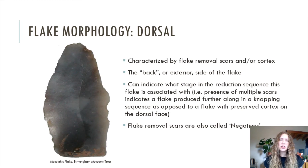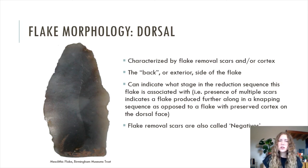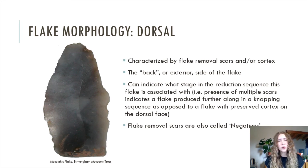The dorsal side of a flake is characterized by flake removal scars. You can see here a ridge running along the middle indicating two previous flake removals — so these are two flake scars. The dorsal, as I mentioned, is the back or exterior side of the flake. It can often indicate what stage in the reduction sequence the flake is associated with — for example, the presence of multiple scars indicates a flake produced further along in a napping sequence, as opposed to a flake with a lot of cortex indicating something not so far along in the napping sequence. Flake removal scars are also often referred to in literature as negatives.